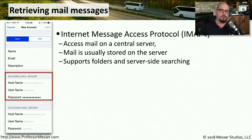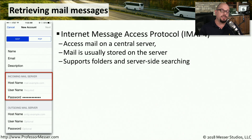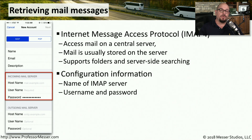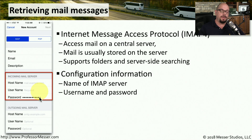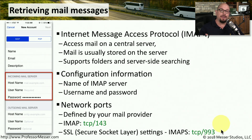A more flexible protocol for retrieving email messages is the Internet Message Access Protocol version 4, or IMAP4. This protocol allows us to retrieve messages but leave them stored on a central server. We have the ability to create folders using IMAP, and we can also perform searches on the server. The configuration for IMAP is almost identical to POP3 — you need the IMAP server name, a username, and a password. The ports are slightly different: without security it uses TCP port 143, and with SSL encryption you're using TCP port 993 for IMAPS.